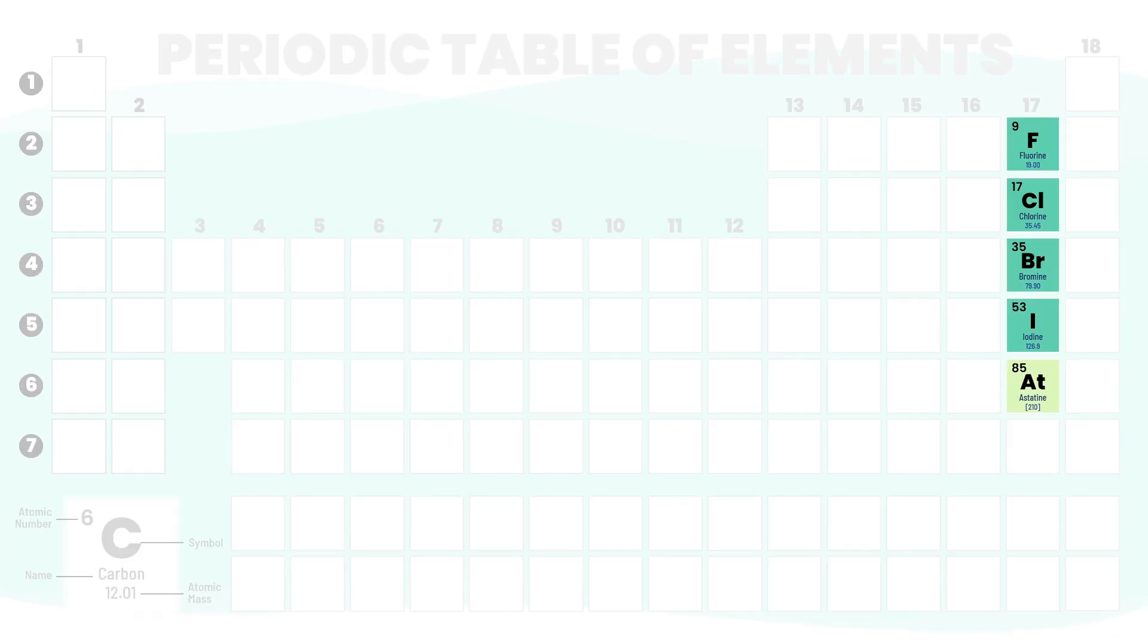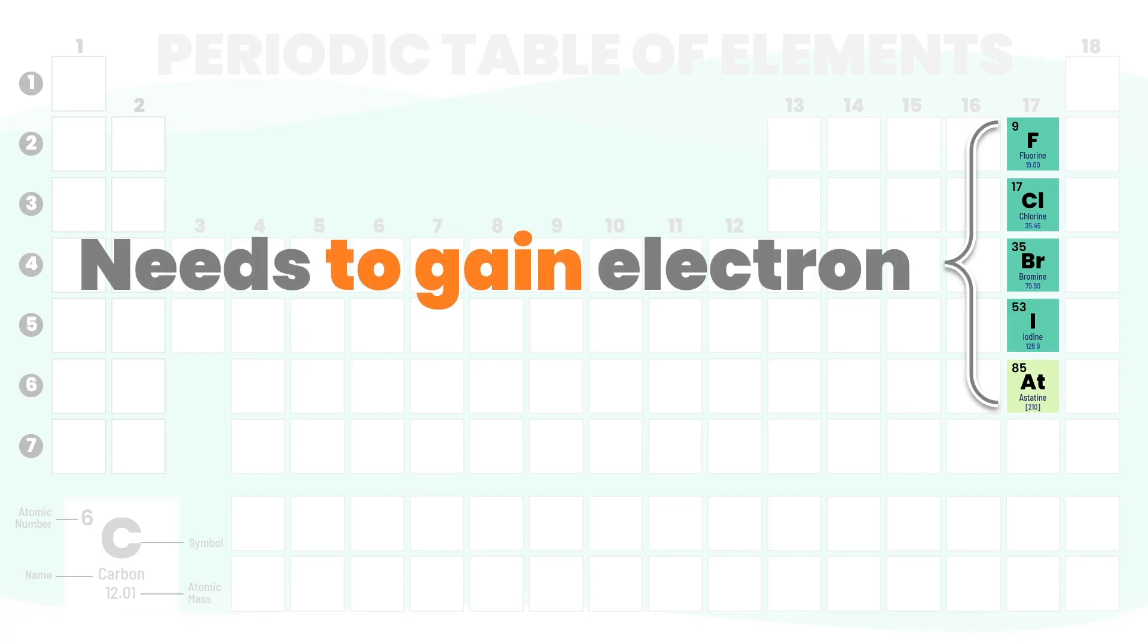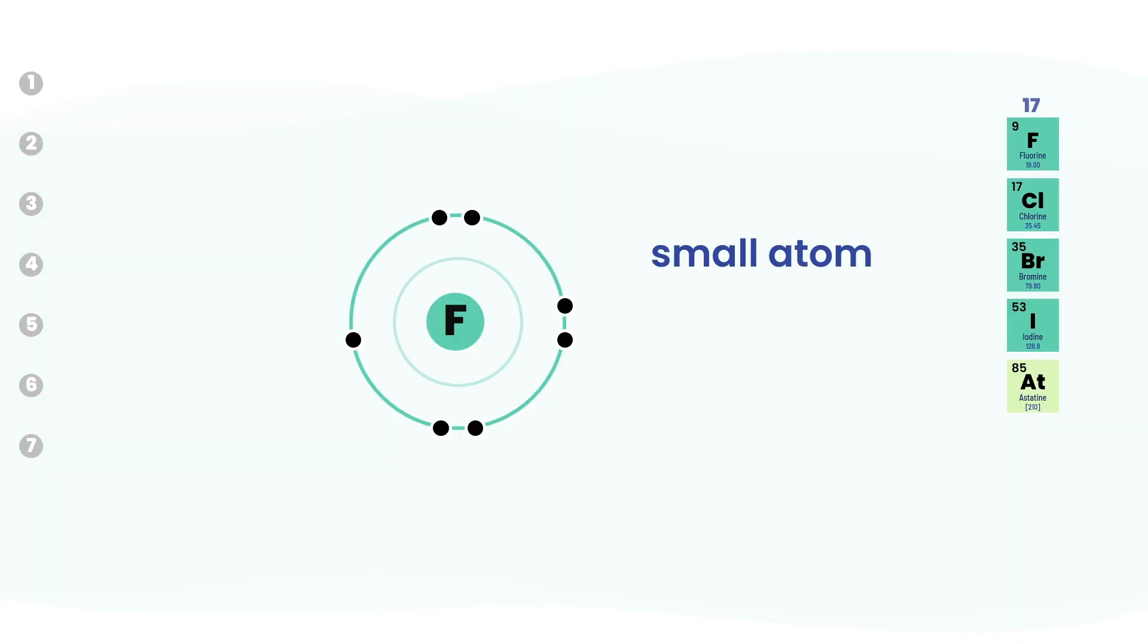On the right side of the periodic table, this story flips. These atoms don't want to lose electrons, they want to gain one. Take fluorine. It's a small atom with a small atomic radius - just a few shells, its nucleus is close to the edge. That means a short distance, a strong pull, a tight grip. So when fluorine sees an extra electron nearby, it pulls hard, it grabs fast. A quick and powerful reaction.